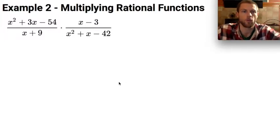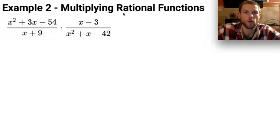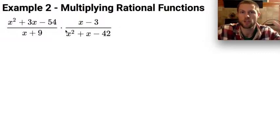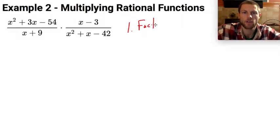Let's take a look at multiplying rational functions. In order to multiply rational functions, the first thing we're going to want to do is factor all the fractions, all of the rational functions. So let's factor everything. Factor all the things.